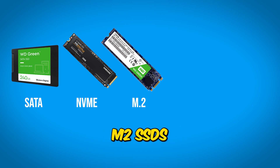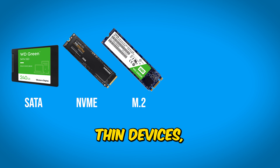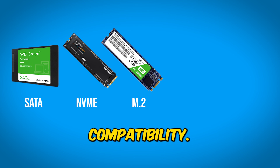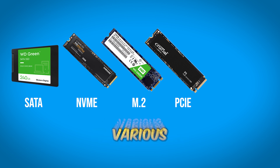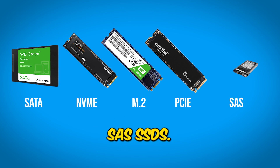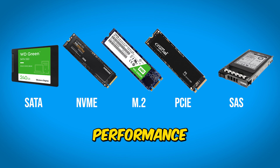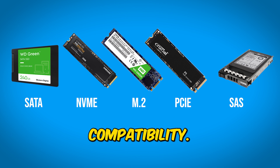M.2 SSDs, with their small form factor and high performance, are ideal for thin devices, but may have limited compatibility. PCIe SSDs, known for extreme performance, come with various form factors, but are expensive and have limited compatibility. SAS SSDs, designed for high performance and reliability in enterprise environments, are also expensive and may have limited compatibility.